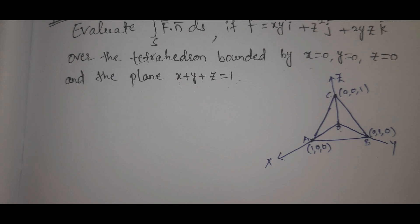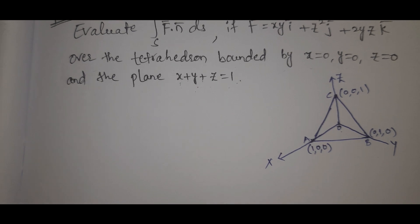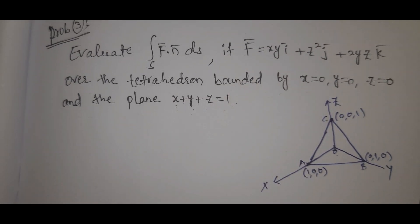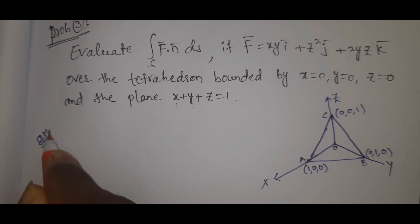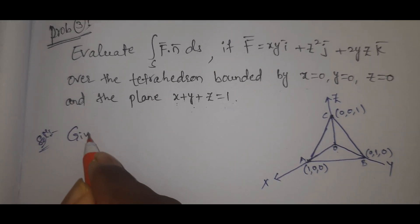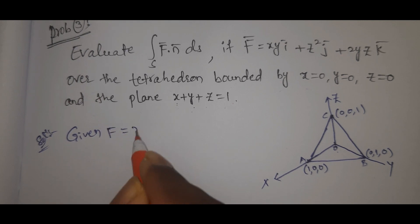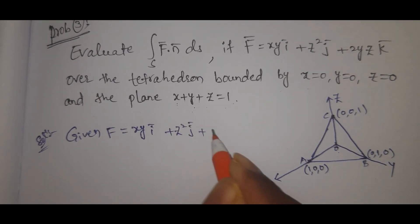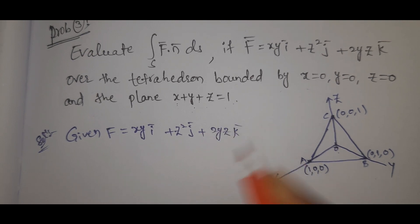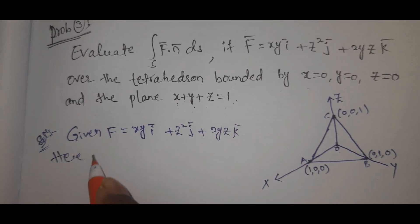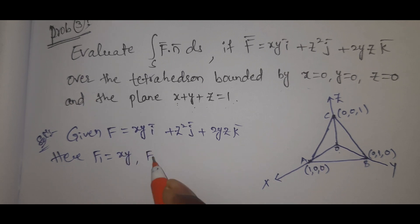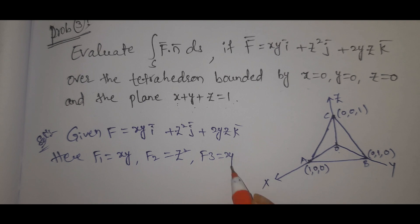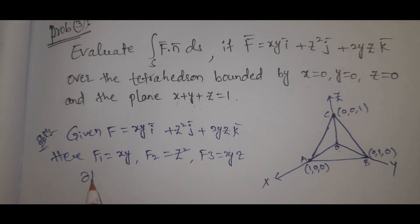Now, given the solution: F-bar equals xy i-bar plus z-squared j-bar plus 2yz k-bar. So F1 equals xy, F2 equals z-squared, F3 equals 2yz.